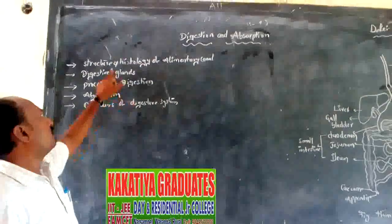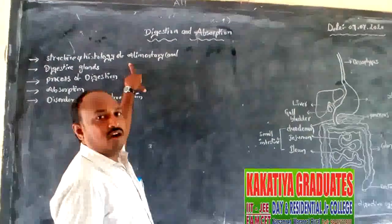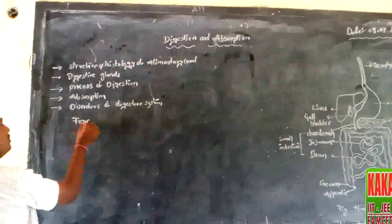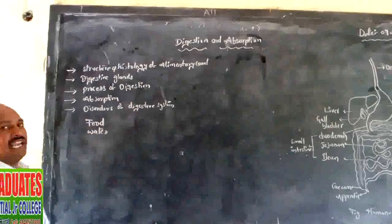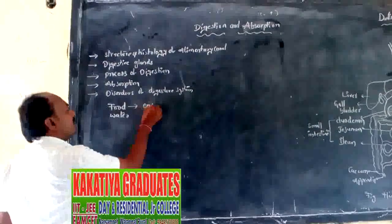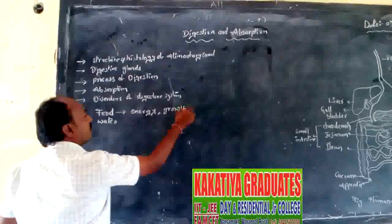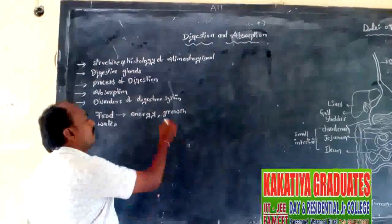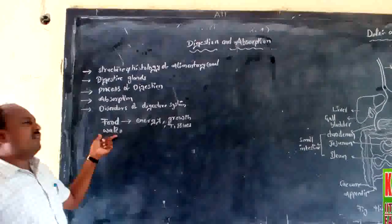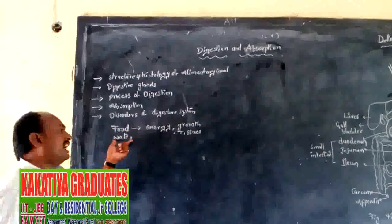Before going to know about the structure and histology of the alimentary canal, we know about the basic needs of all living organisms. Those are food and water. Food will liberate energy and provide growth to the tissues, cells, and body of the organisms, and repair the tissues. Water gives a medium to the food and prevents the dehydration process from the body.